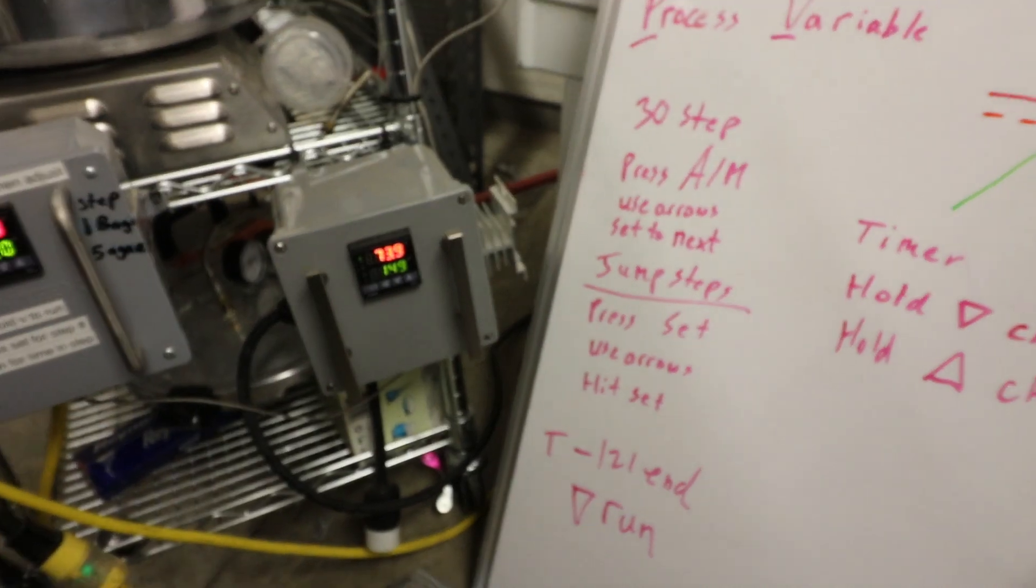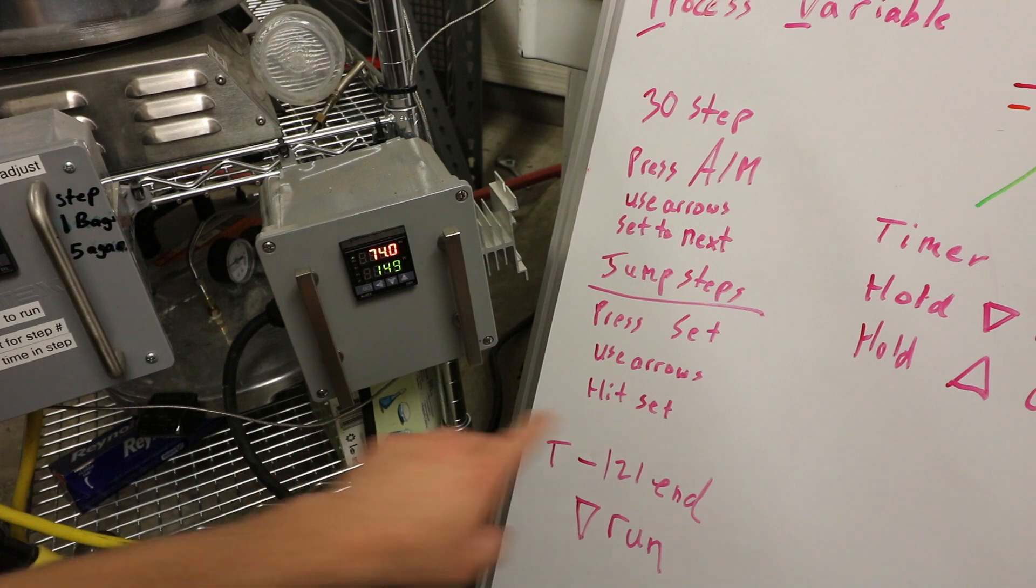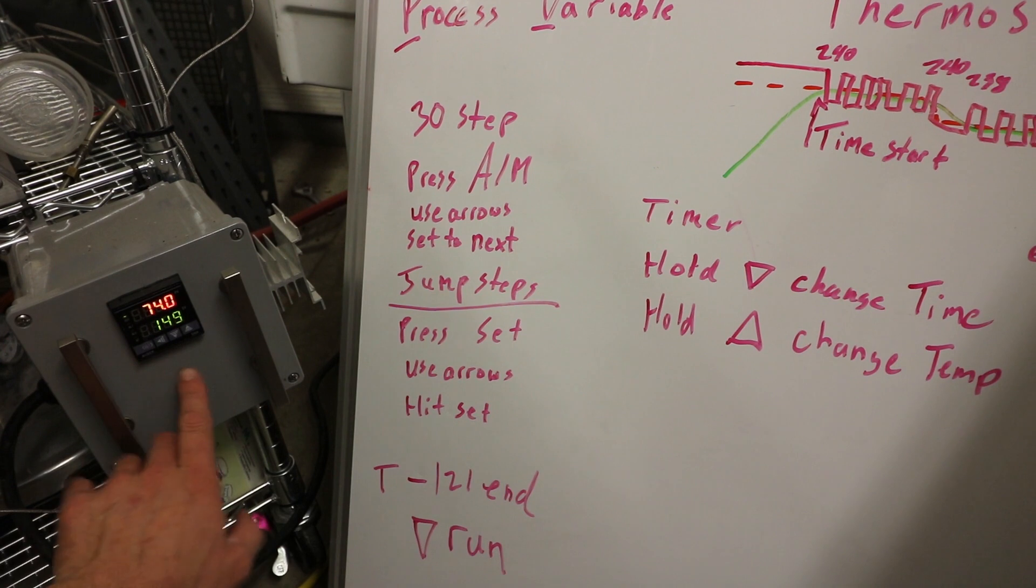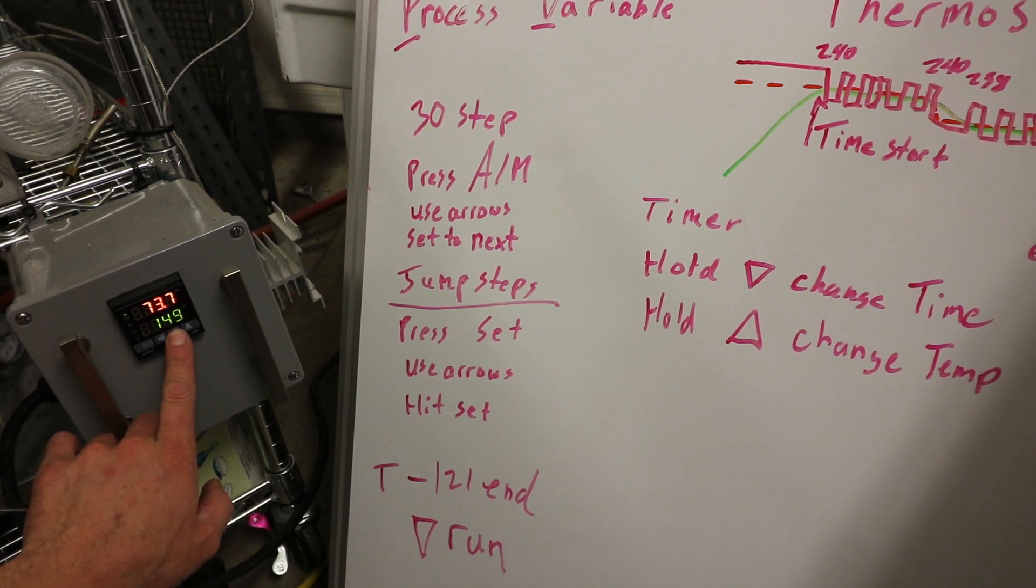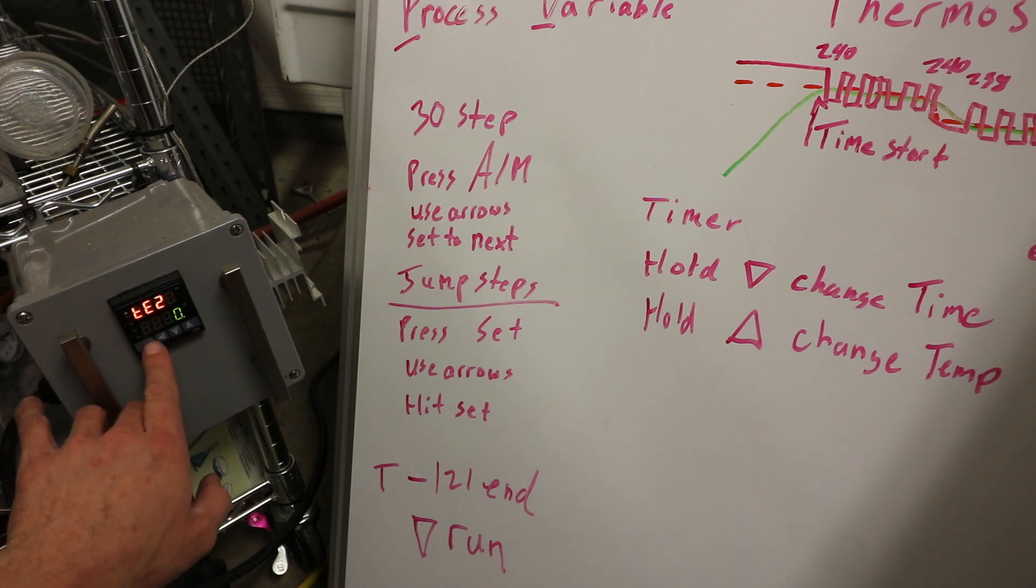So if you want to adjust the time, the timer says hold down to change time. So all you do is you press the down button. If I wanted to adjust that, move the decimal over. That's how you adjust the time.